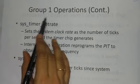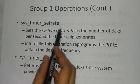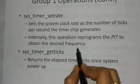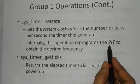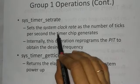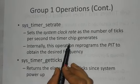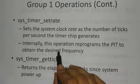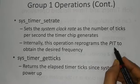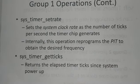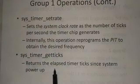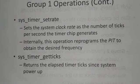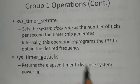Also in Group 1 operations: system timer set rate. Each chip has a specified frequency rate, as discussed in programmable interval timers. This sets the system clock rate as the number of ticks per second the timer chip generates — the rate of ticks. Internally, this operation reprograms the PIT — programmable interval timers — to set and obtain the desired frequency. Next is system timer get ticks, which returns the elapsed timer ticks since system power up — activated whenever power is either off or on.